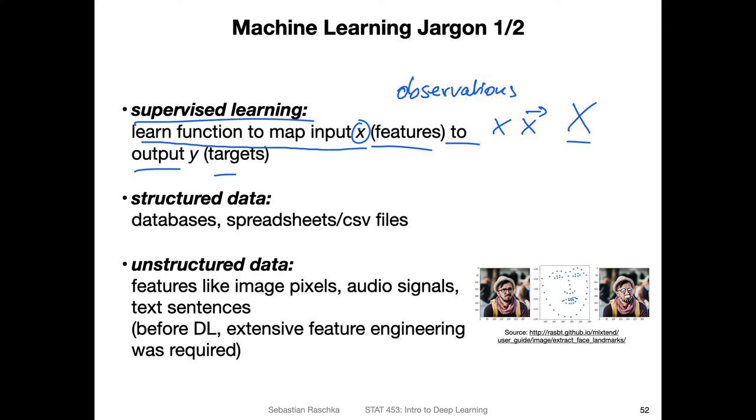So the next term here on the slide is structured data, which we discussed also in the previous video. The term structured data usually refers to data in a format of tables - you can also think of it as tabular data. It usually comes in the form of databases like SQL databases, for example, or if you think of Excel spreadsheets or CSV files, this would be a typical example of a structured dataset.